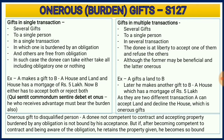Section 127 is an important section and can be an independent short-note question. It is known as onerous gifts or burden gifts. There are two types of transactions: gifts in a single transaction and gifts in multiple transactions. In a single transaction, the donor is gifting several properties to the donee — among these, some are burdened with an obligation and the rest are free from obligation.